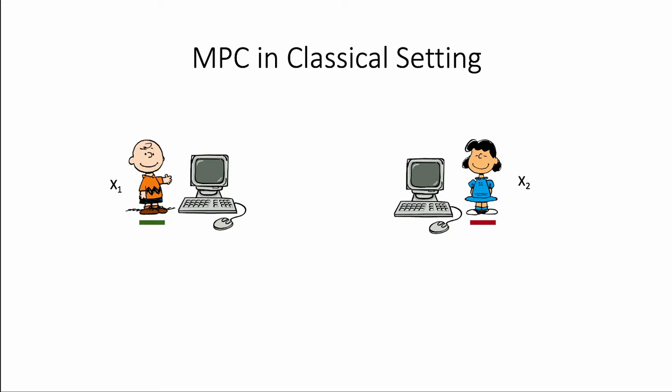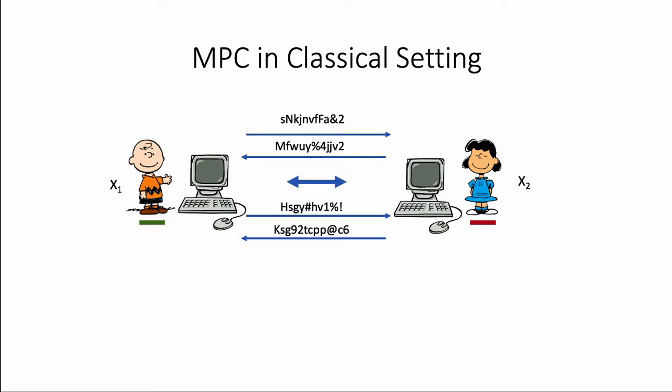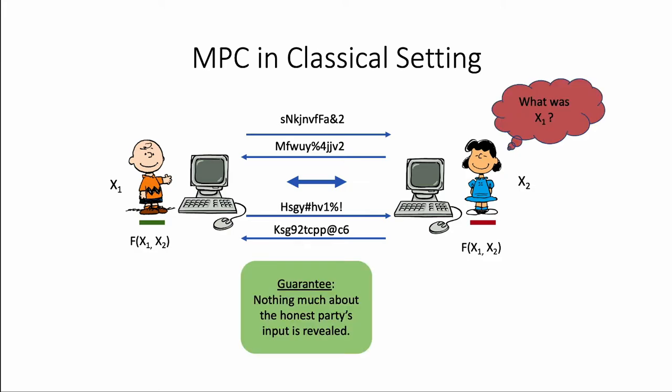Suppose Charlie and Lucy want to compute a function f on their inputs x1 and x2 securely. By securely, we mean that Lucy, who is corrupt, should only learn about the output and nothing else about Charlie's input. In the classical setting, Charlie and Lucy will run a 2PC protocol and exchange some round messages, and towards the end, both parties would be able to compute f of x1 and x2. The guarantee is that Lucy will not learn anything about Charlie's input except for whatever is revealed from the function output itself.